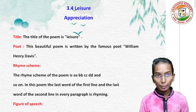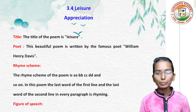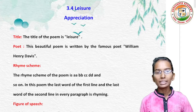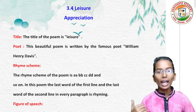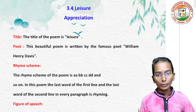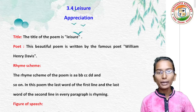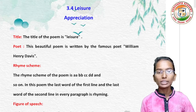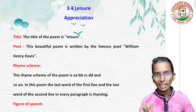What is the rhyme scheme of the poem? The rhyme scheme of the poem is AABBCCDD and so on. In every paragraph, the last word of the first line and the last word of the second line are rhyming.